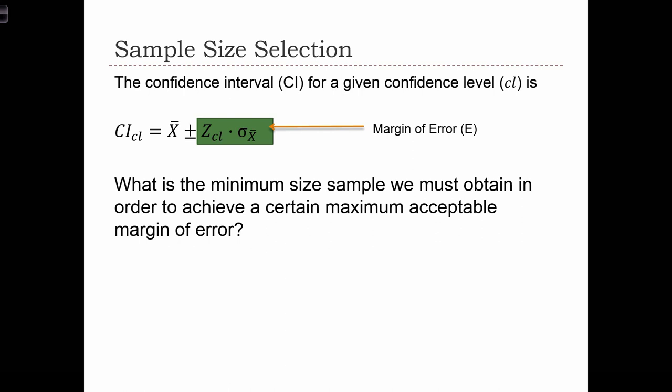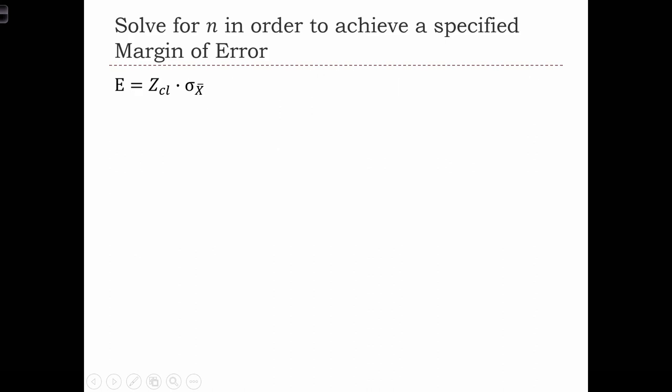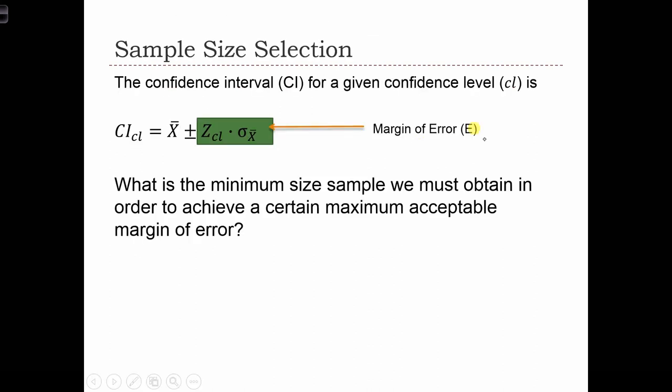Here we have the standard formula for our confidence interval. We can see that the confidence interval is expressed as the mean plus or minus what we call the margin of error. This margin of error is just something that we will denote with the letter E for now.